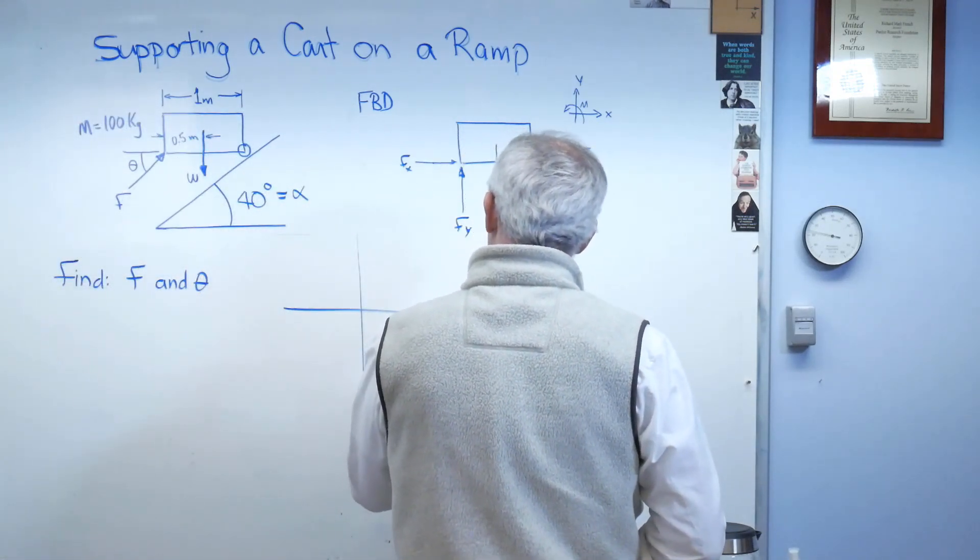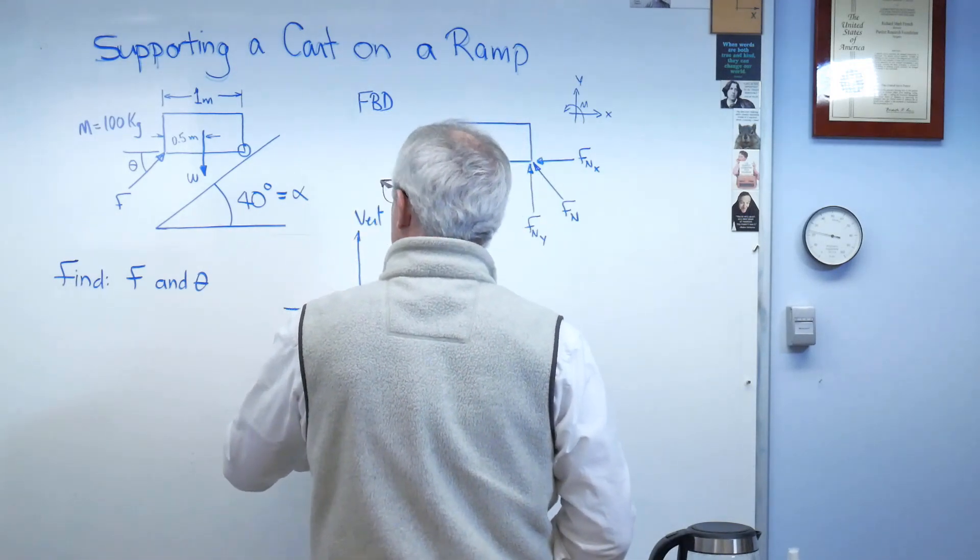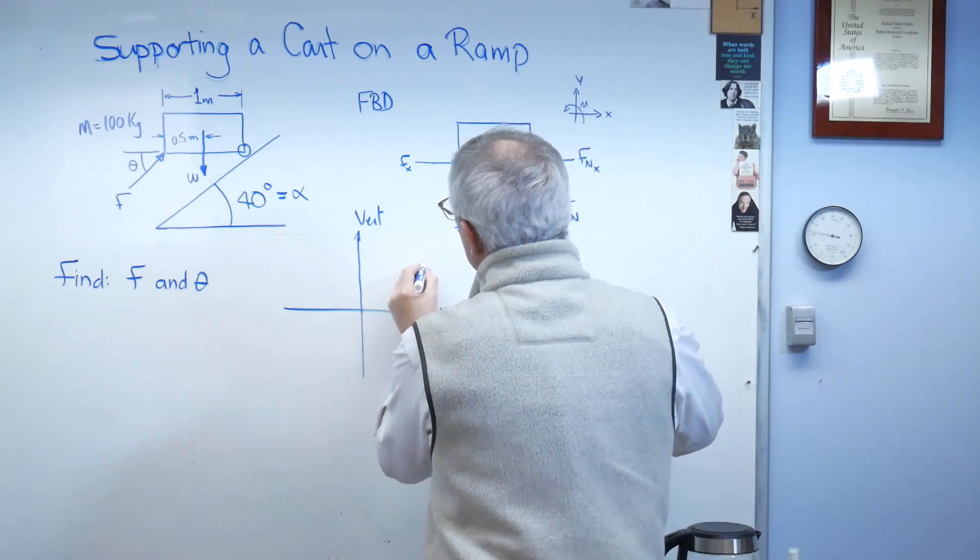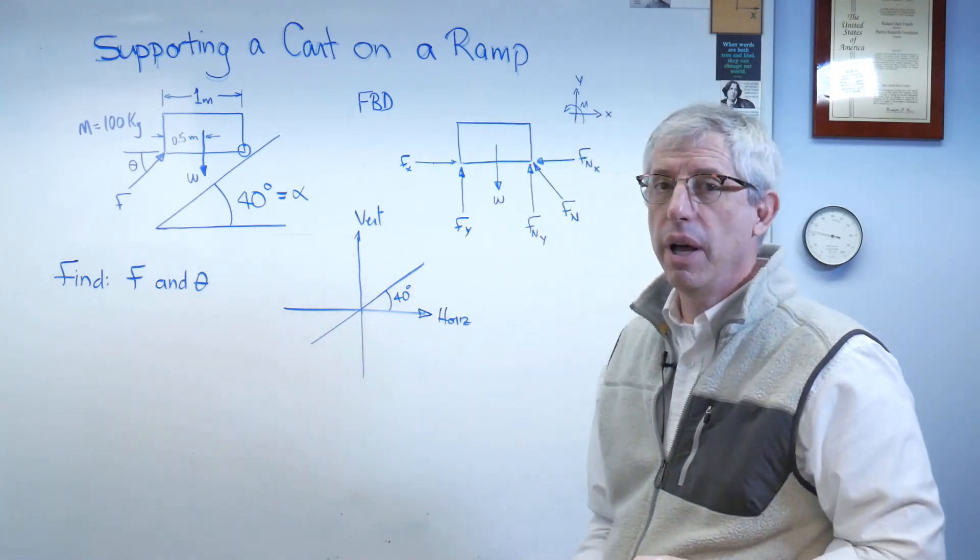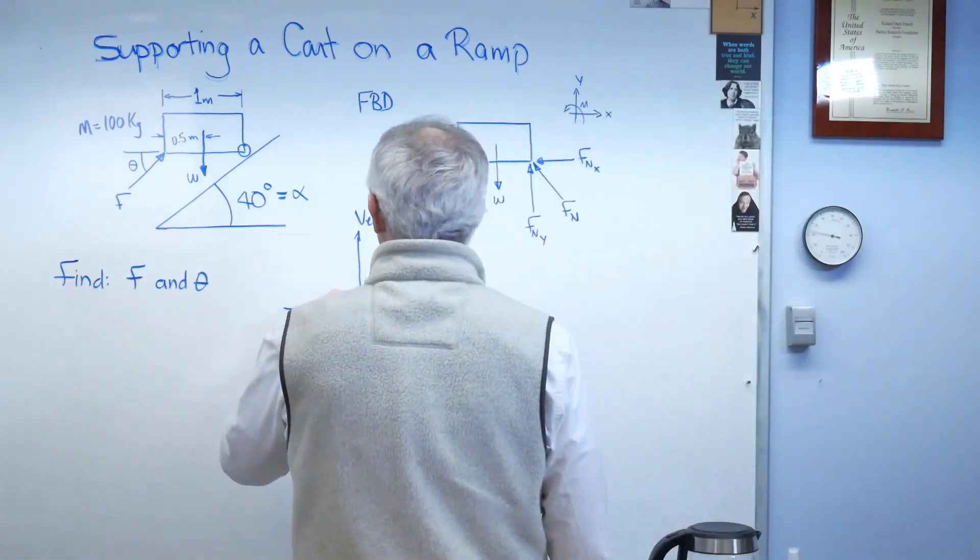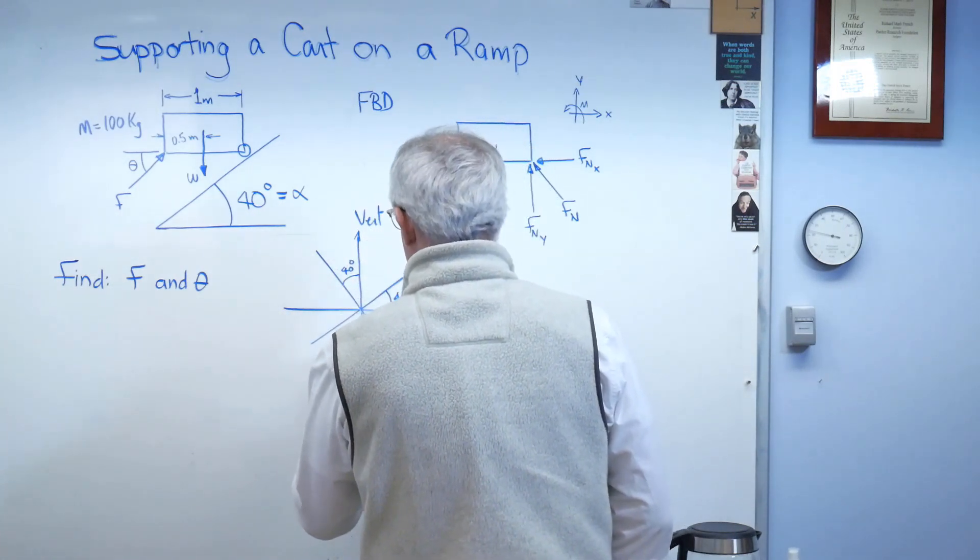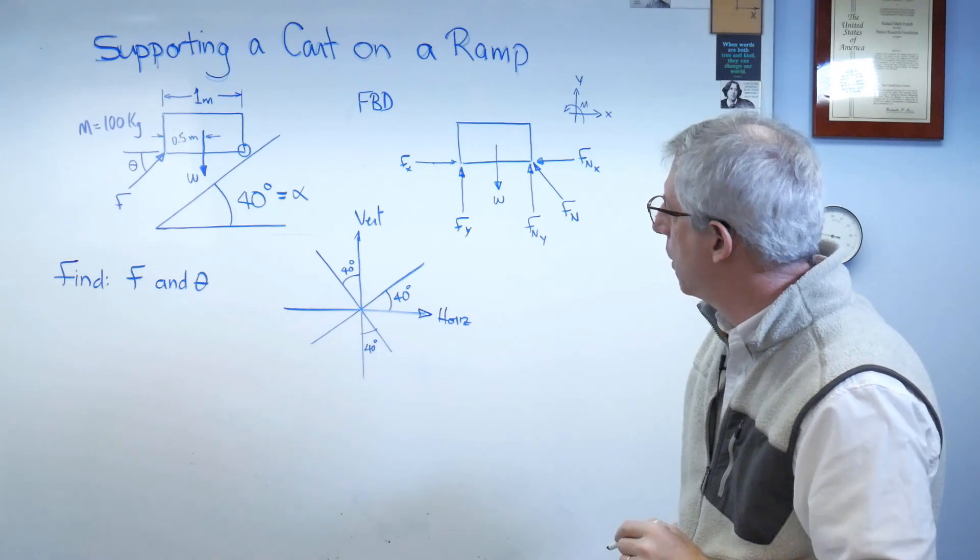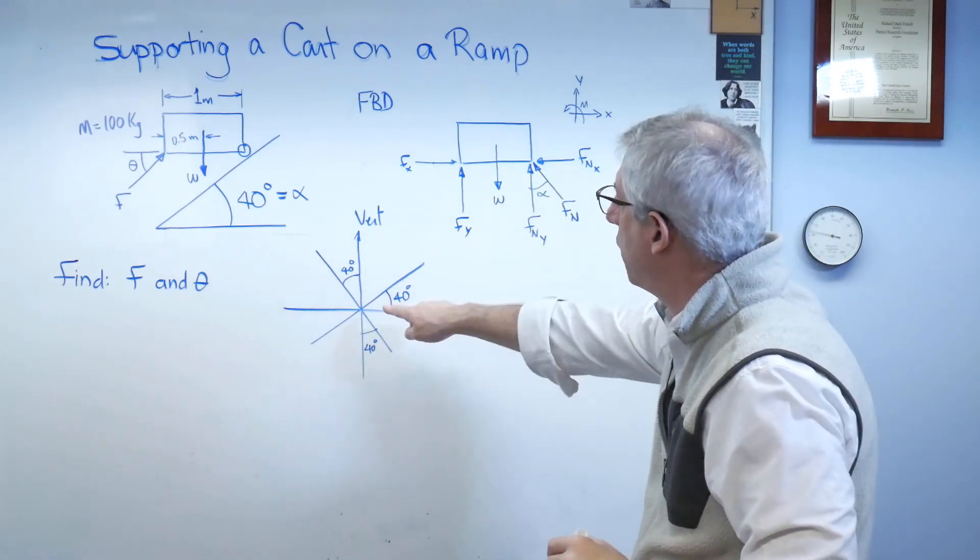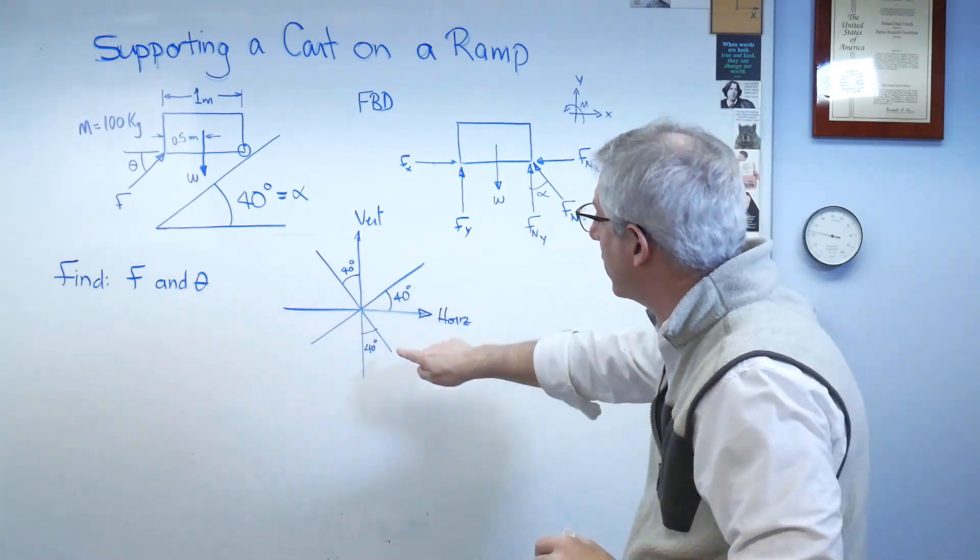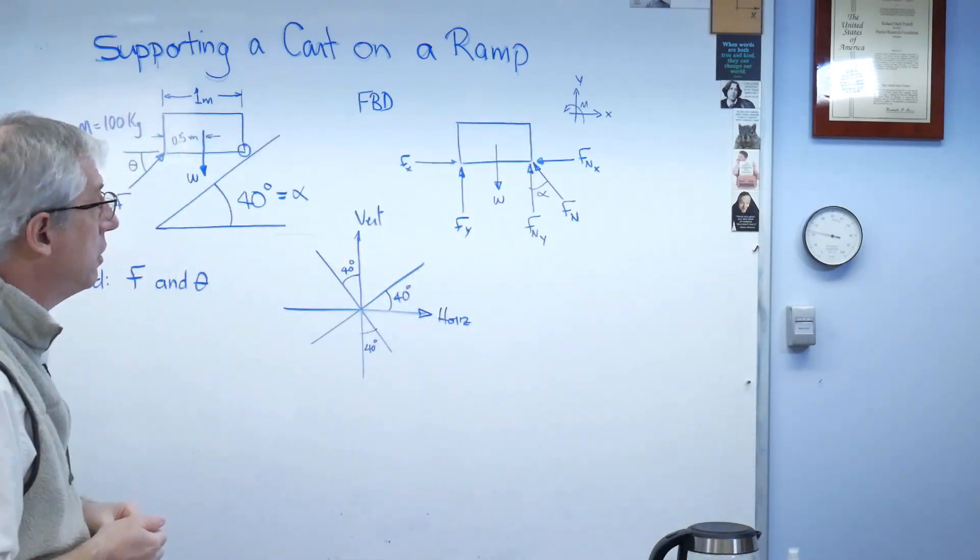So let's start here. There's horizontal and there's vertical. Now my ramp is rotated from the horizontal by 40 degrees. Well, if the horizontal is rotated, the vertical must be rotated too. And I know from geometry there's 40 degrees. So that must be alpha right there, based on this. That must be alpha because that angle there and that angle there are the same. So with that, I'm going to clean this drawing up a little more. Now we know alpha's 40 degrees.